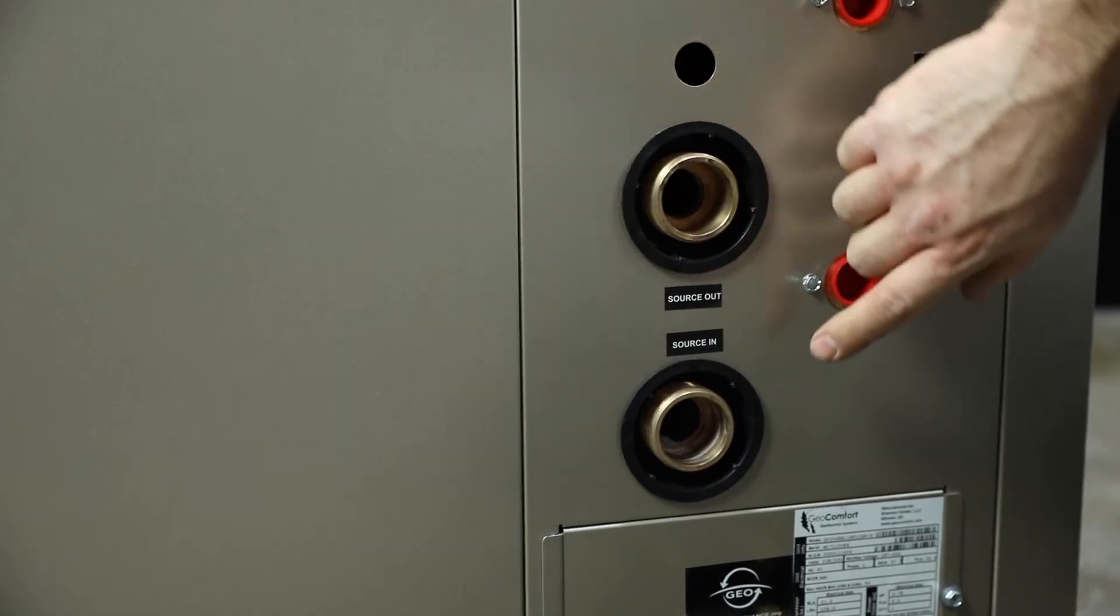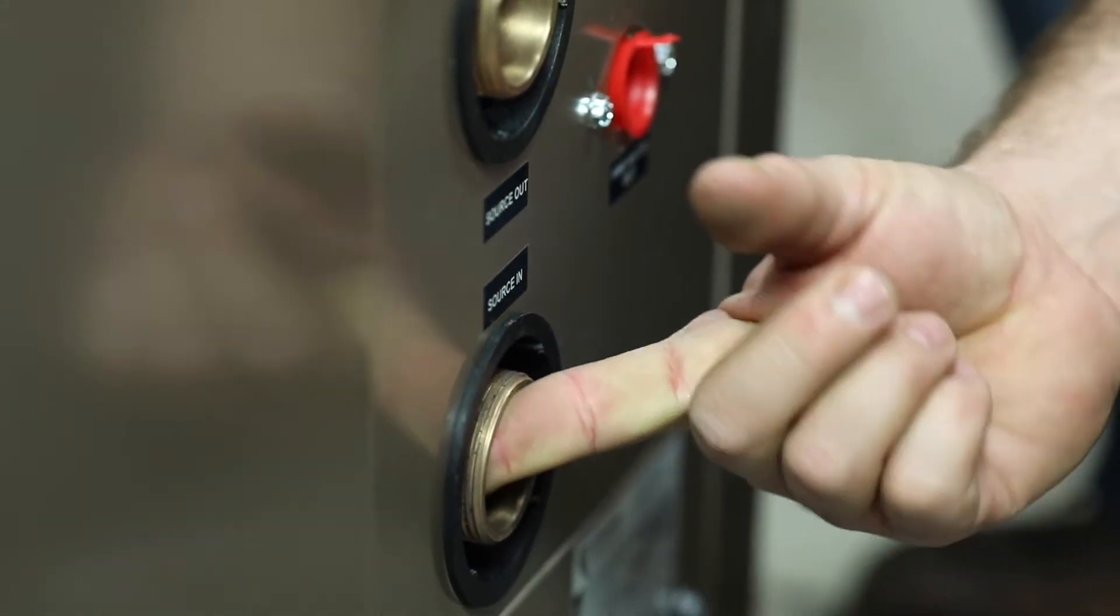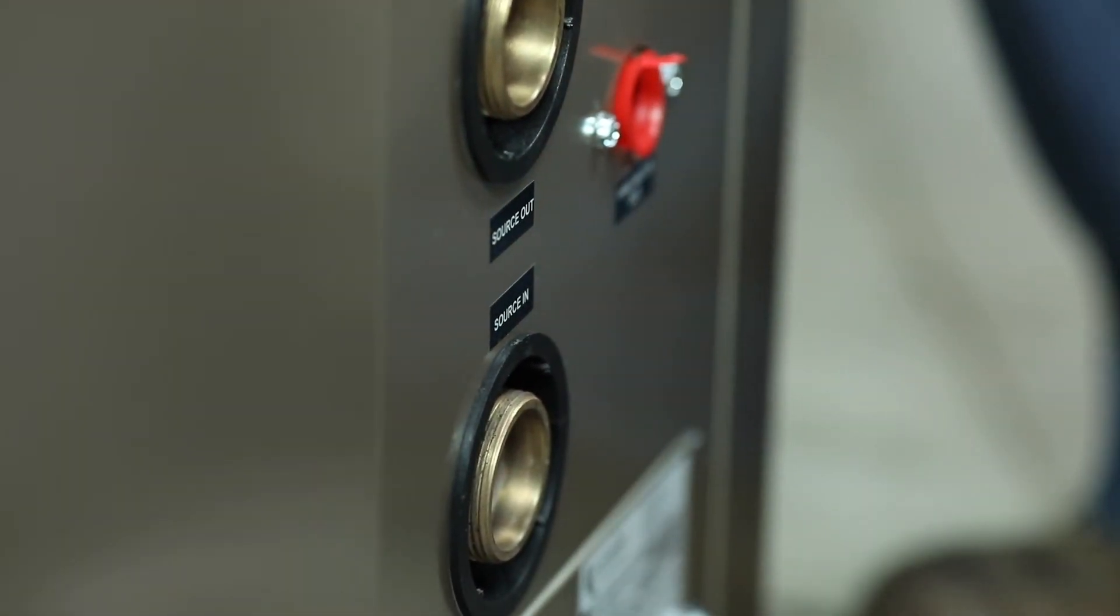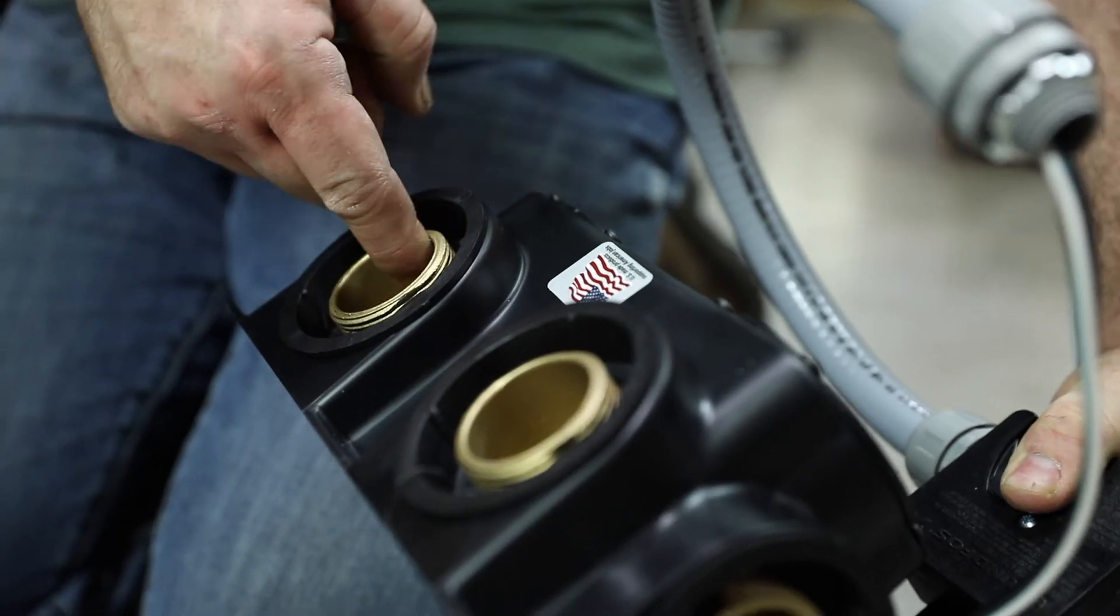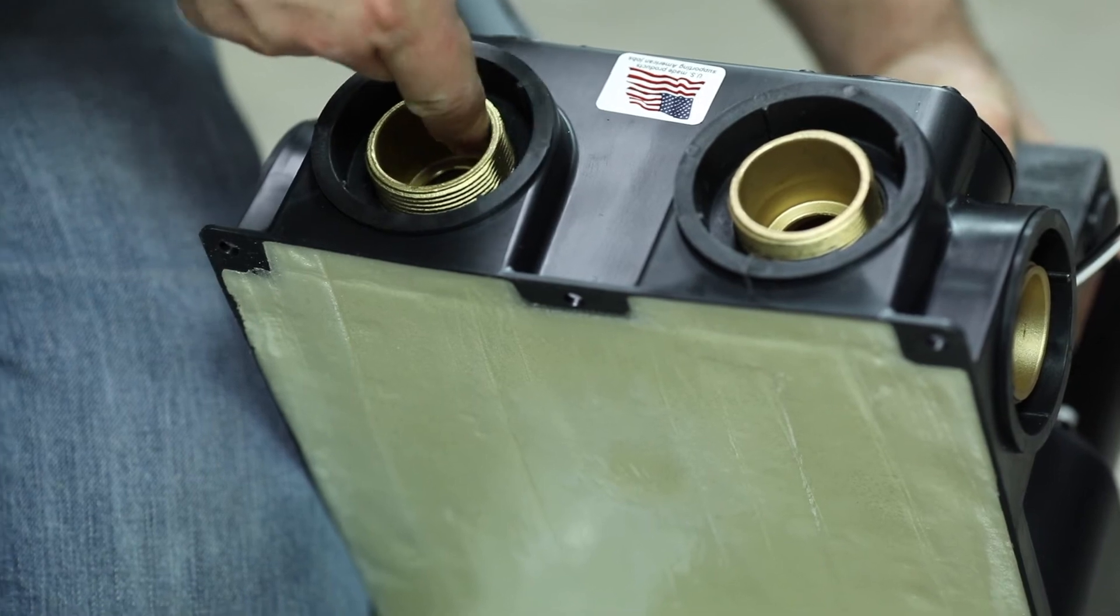Inspect all o-rings and confirm they are in good condition. It is important to lubricate all o-rings on both ends of each fitting before connecting. Be sure to lubricate the inside of both fittings on the unit as well as those on the female threads of the flow center.